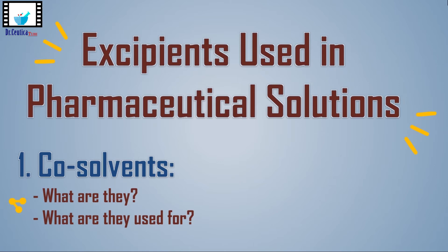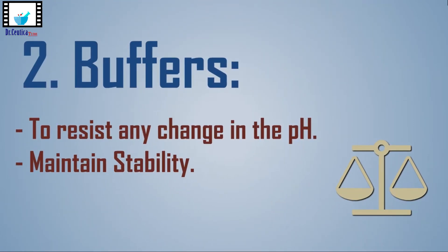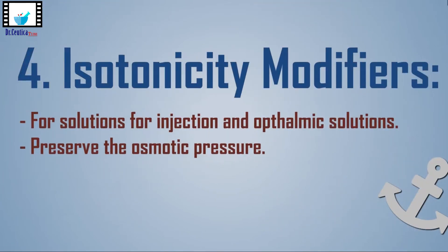Now we have our API dissolved in a suitable solvent system. What else should we add to make a successful pharmaceutical solution formulation? We might need to add buffers to resist any change in the pH of the solution, which might affect solubility and stability. Also, if we have vitamins, essential oils, or anything prone to oxidation, it's essential to consider adding antioxidants. For solutions for injection and ophthalmic solutions, we might need isotonicity modifiers to maintain osmotic pressure and prevent any disturbance to body physiology.